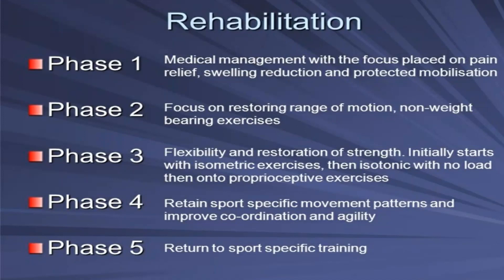Phase 3 focuses on flexibility and restoration of strength. We initially start with isometric exercises, then isotonic with no load, then move on to proprioceptive exercises. Phase 4 involves retraining sport-specific movement patterns and improving coordination and agility, achieved through quick movements, plyometrics, and coordination exercises. Phase 5 is the return to specific training or return to sport.